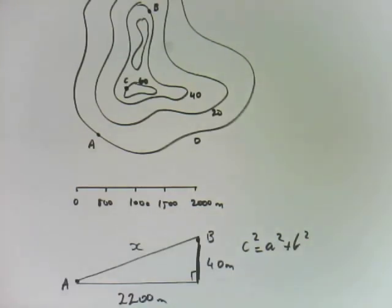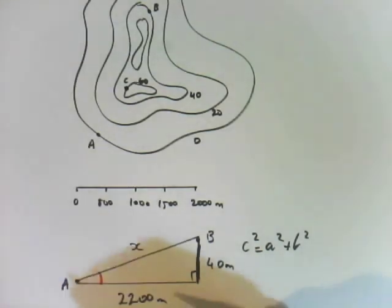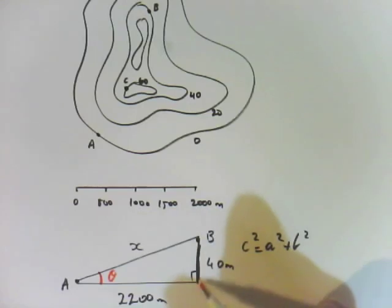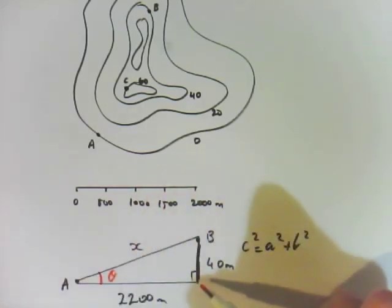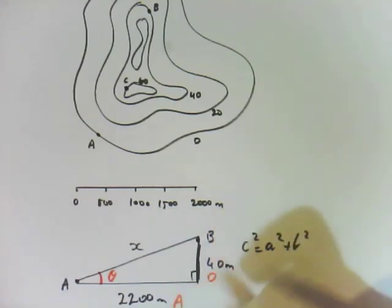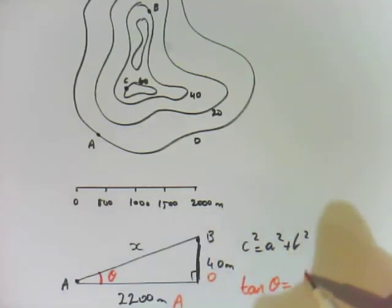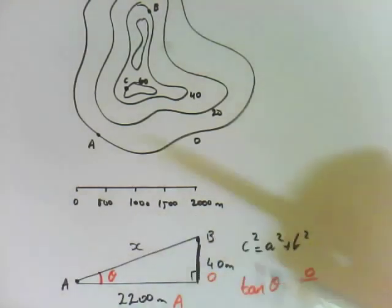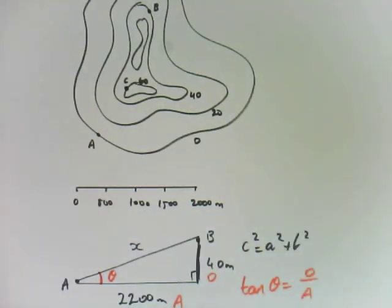The second thing they might ask you to find is the average slope — the angle between A and B. If you have the vertical height difference and the horizontal distance, you're in a right-angle triangle with O and A, so you use tan θ = O/A. Once you understand what a contour map is showing you, you can use all the skills from chapter 7 and chapter 8 to work out angles or distances.